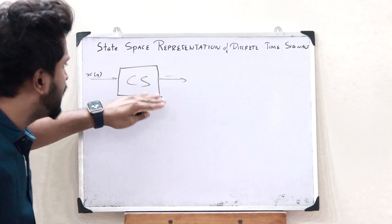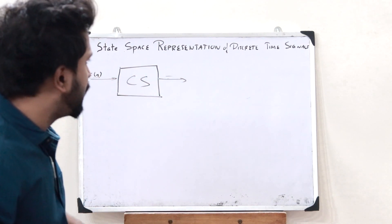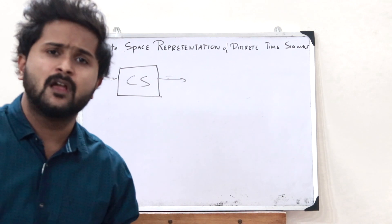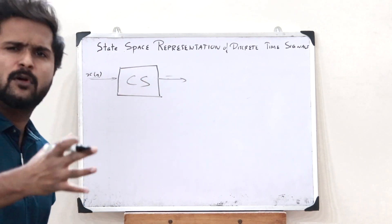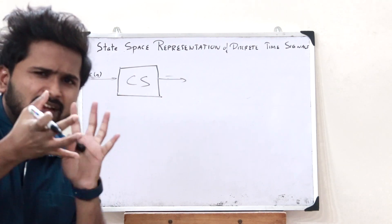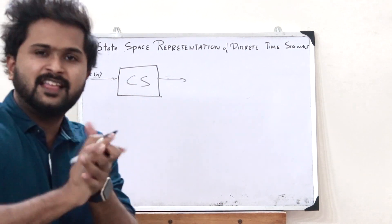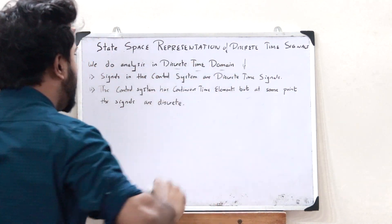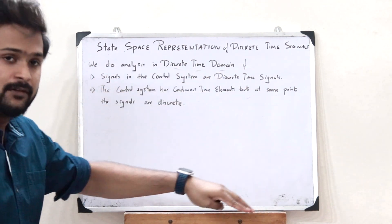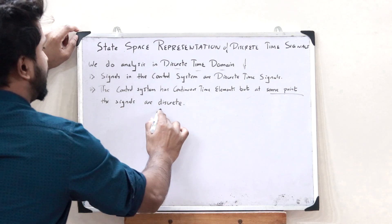If all the signals associated with the particular control system are discrete time signals, that is when we do all the analysis regarding this control system in the discrete time domain. Or, the second case: if this particular control system has all elements working in the continuous time domain, but at some point the signals associated with this control system are in the discrete time domain — that is when we do the analysis techniques in the discrete time domain.